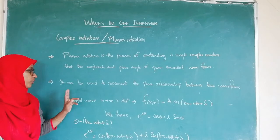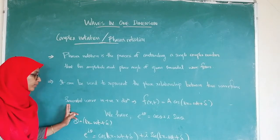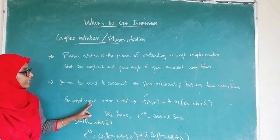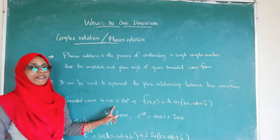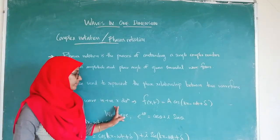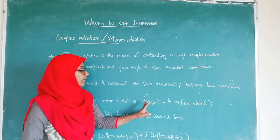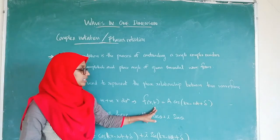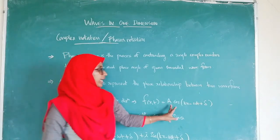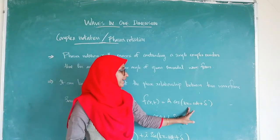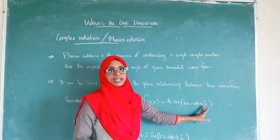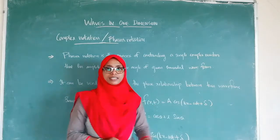As we know, the sinusoidal wave equation traveling through the positive x-direction can be written as f(x, t) = A cos(kx − ωt + δ).